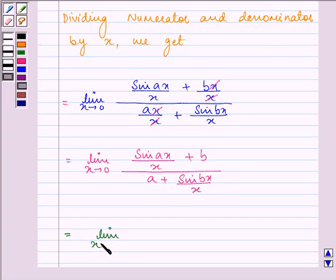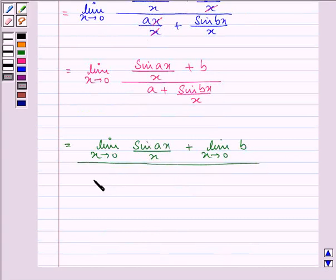we have limit x approaches 0, sin ax upon x plus limit x approaches 0, b divided by limit x approaches 0, a plus limit x approaches 0, sin bx upon x.